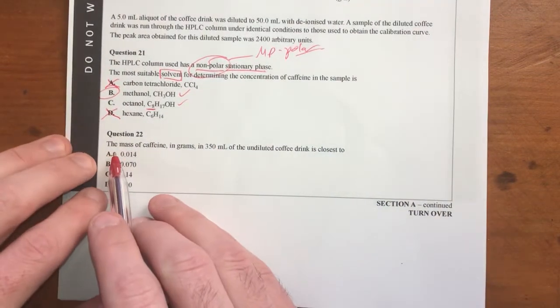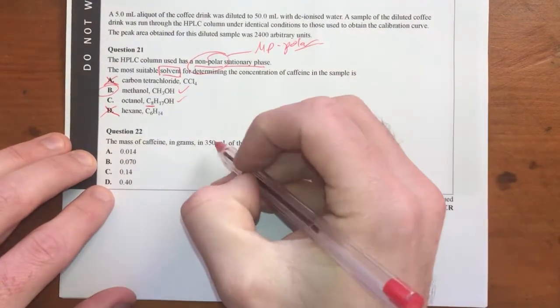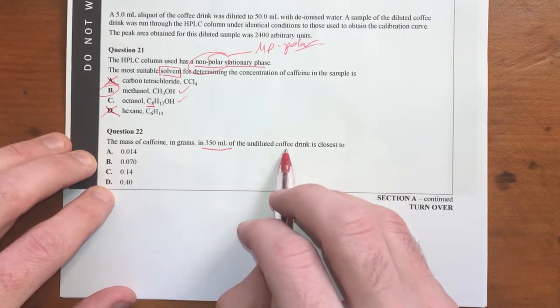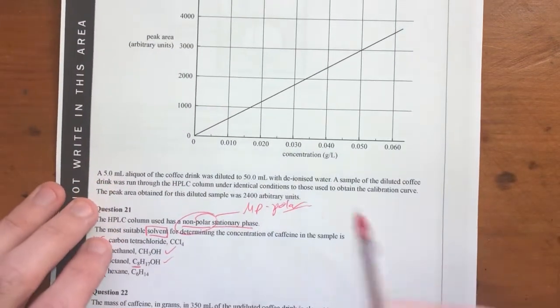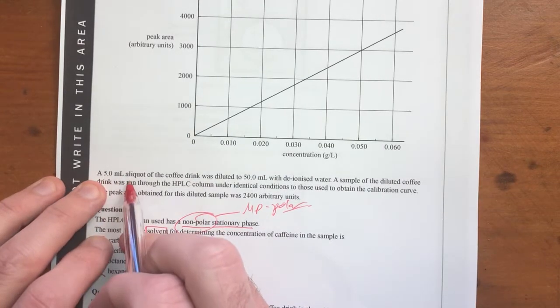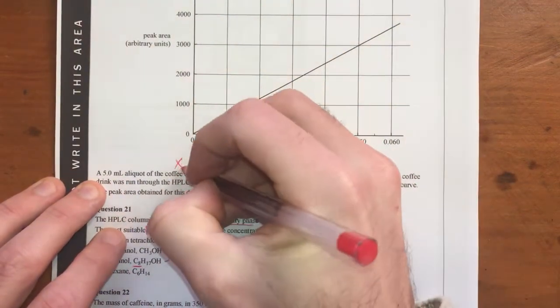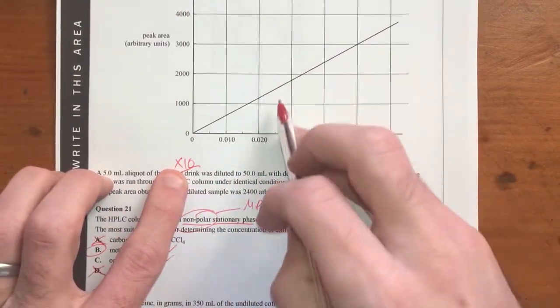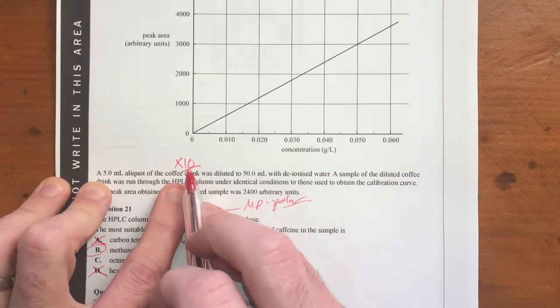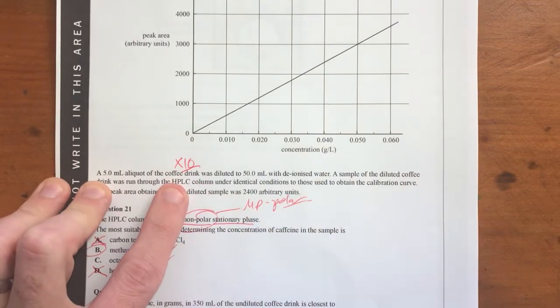Question 22. The mass of caffeine in grams in a 350 ml undiluted coffee drink is closest to what? Okay, so let's have a look at the information that we've got. 5 ml aliquot of coffee drink was diluted to 50 ml. That's a 10 by dilution. So therefore whatever value I get from my calibration curve, I need to factor in that dilution and multiply it by 10 to get back to what my original concentration was.